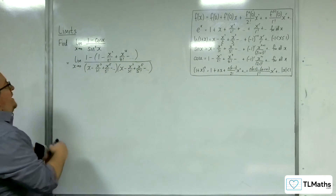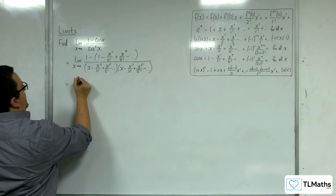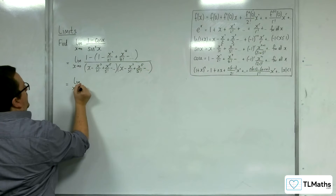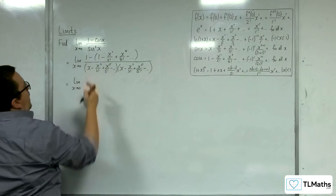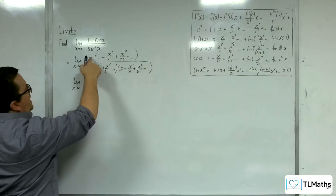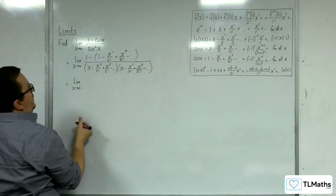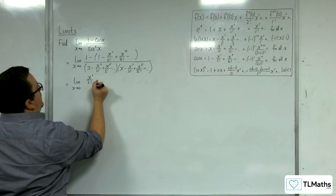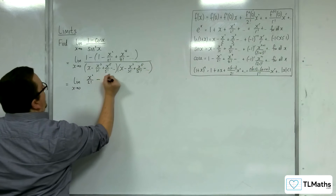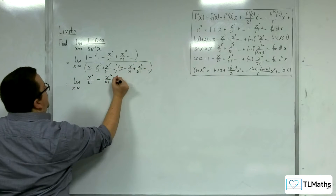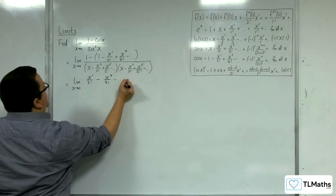Now I need to simplify the numerator and denominator. In the numerator we have 1 minus 1, and the rest of the terms get multiplied by the minus sign, giving us x² over 2! minus x⁴ over 4! plus etc.